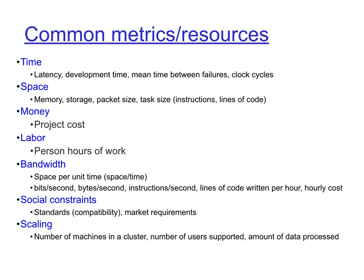Instructions per second defines CPU speed; lines of code per hour defines programmer productivity; hourly cost defines the rate of budget burn. There are also industry standards such as IEEE standards that you must meet, and market requirements that can be either metrics or constraints. Scaling refers to the ability of a system to handle bigger inputs or bigger loads — for example, how many machines are in a cluster, how many users a cloud workload should support, or how much data a data processing application must handle.